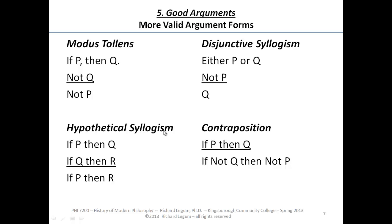It's impossible for premises like that to be true while at the same time the conclusion is false. Moving to the upper right corner: disjunctive syllogism. We now know what a syllogism is — an argument with two premises and a conclusion. And disjunctions are either-ors, meaning they're disjoined: one or the other. Either P is true or Q is true. Not P — in other words, P is false. Therefore, it's got to be Q.